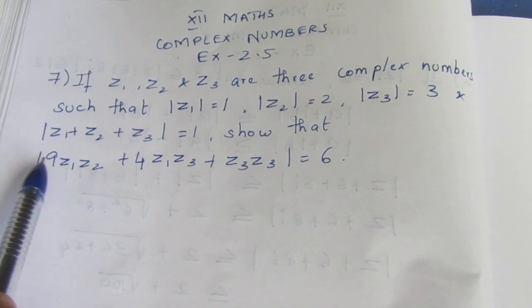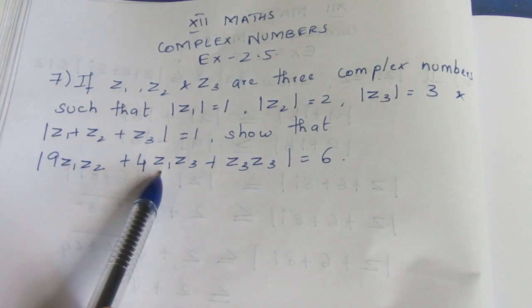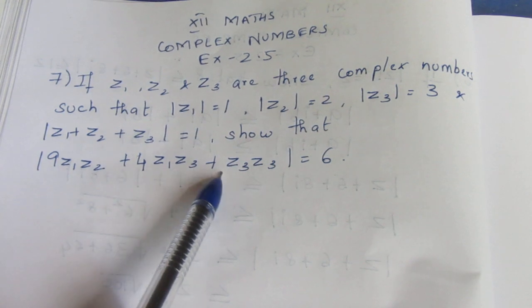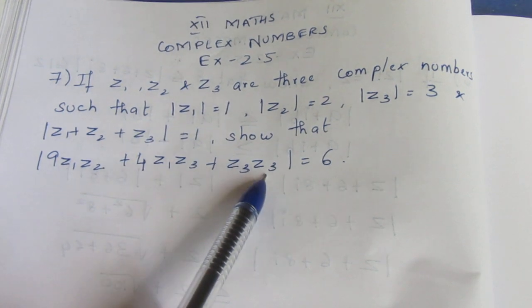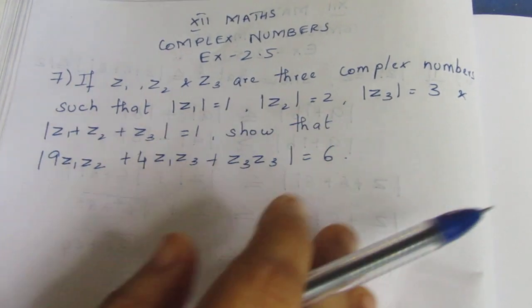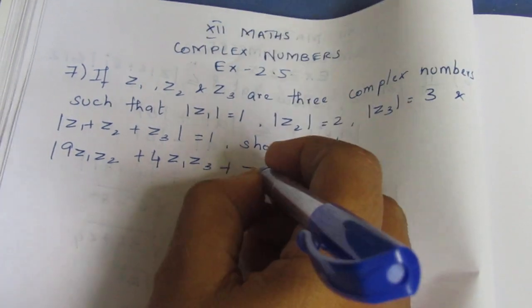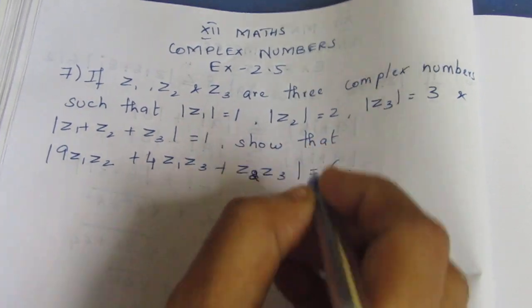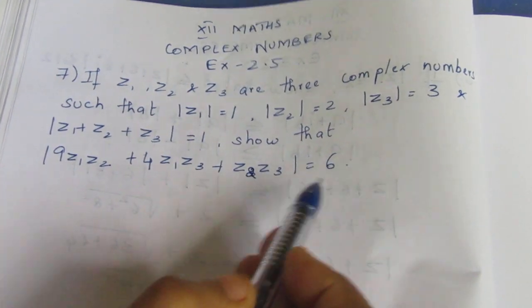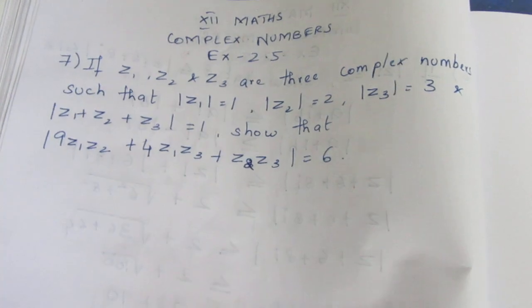Show that modulus of 9 Z1 Z2 plus 4 Z1 Z3 plus Z3 Z2 equal to 6.